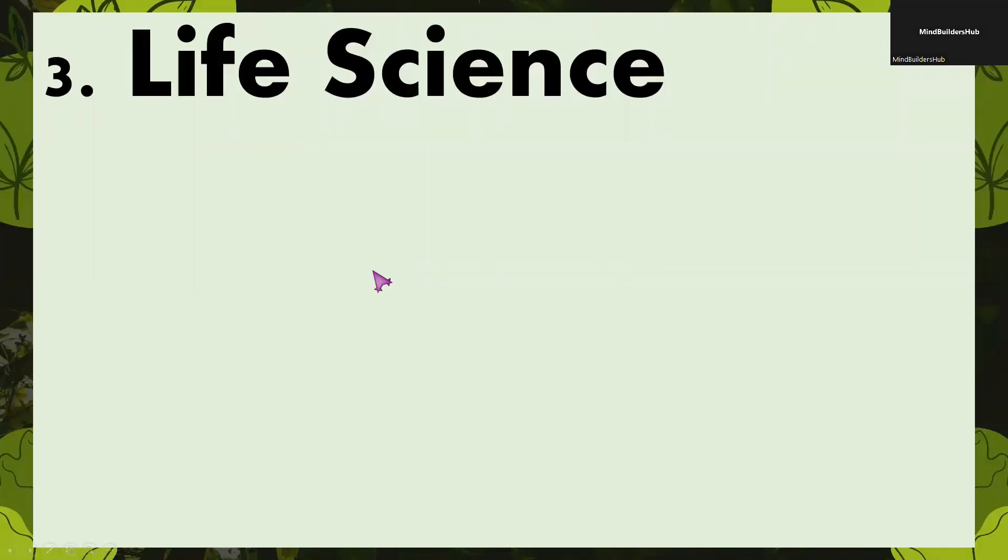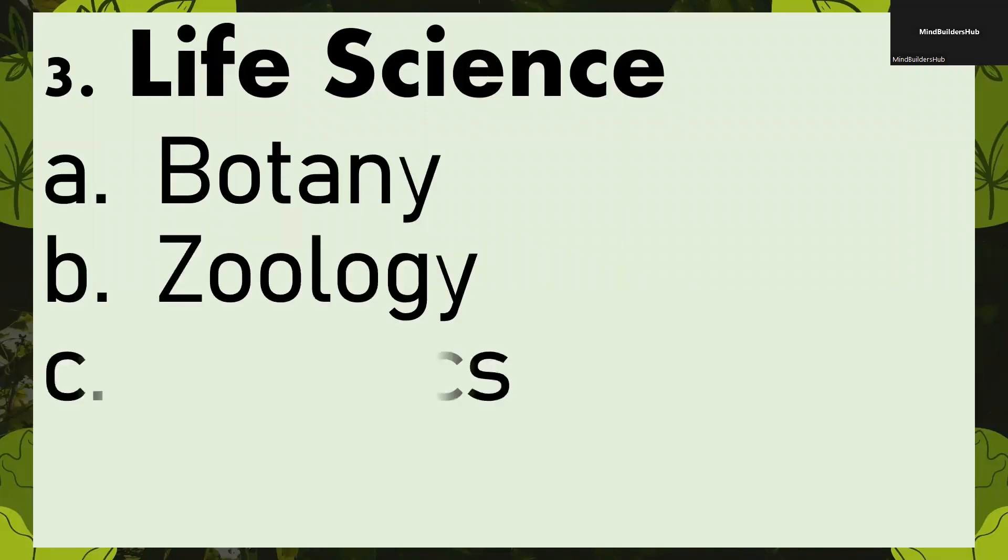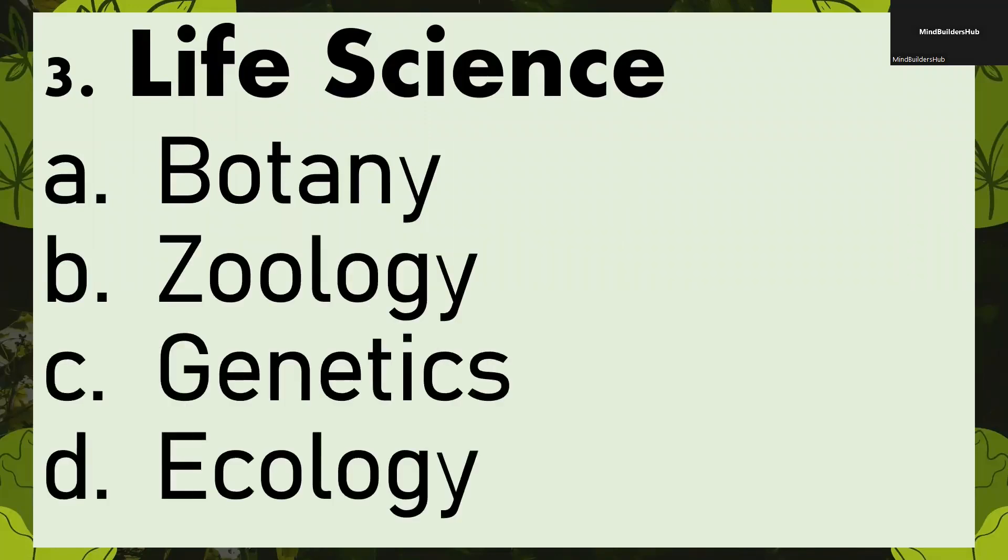And last, for the major branch of science, is called the life science, or also known as biology. Biology, because bio means life. So in here, we're going to study the botany, the zoology, genetics, and ecology. These are some examples of the sub-branches. We have lots of them, but I just chose these for us to study.